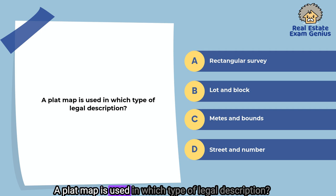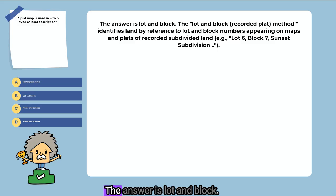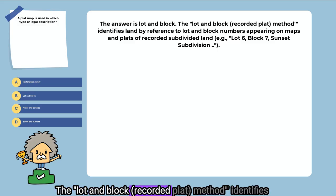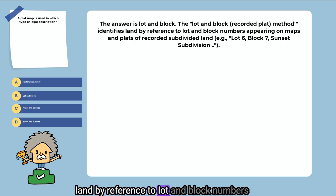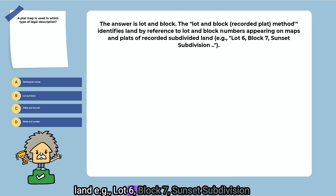A plat map is used in which type of legal description? Rectangular survey, lot and block, metes and bounds, or street and number. The answer is lot and block. The lot and block method identifies land by reference to lot and block numbers appearing on maps and plats of recorded subdivided land — e.g., lot 6, block 7, Sunset Subdivision.